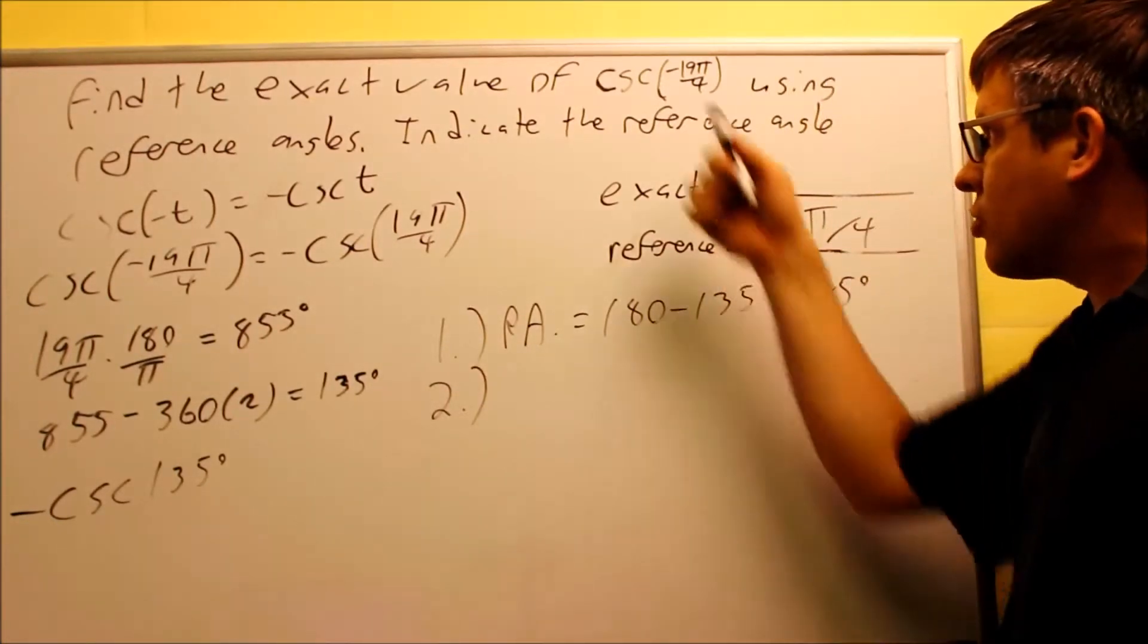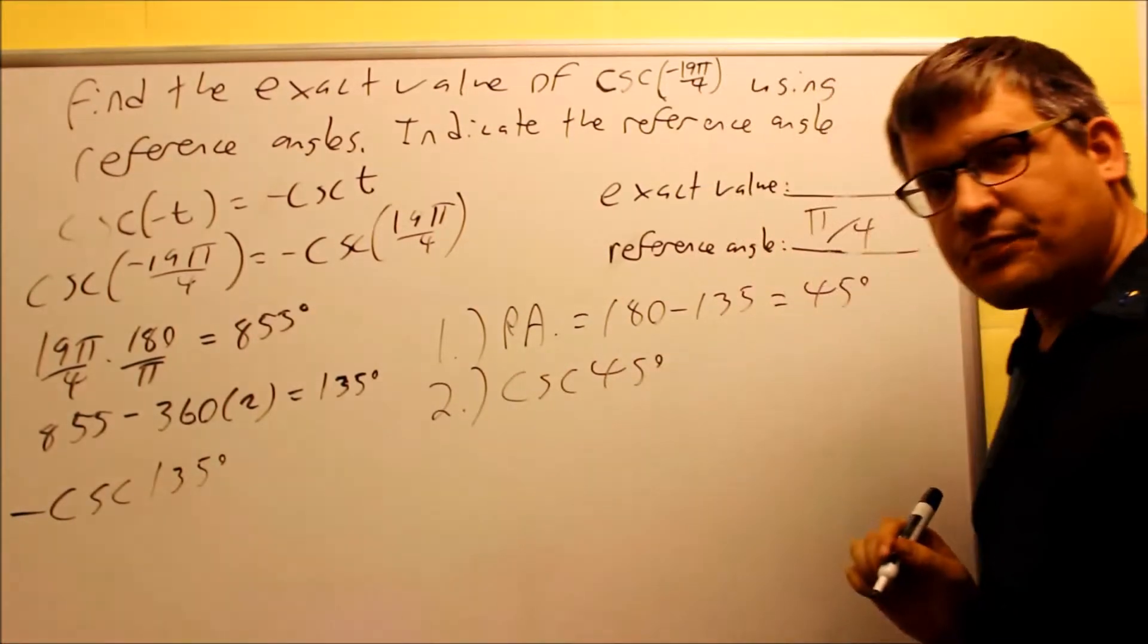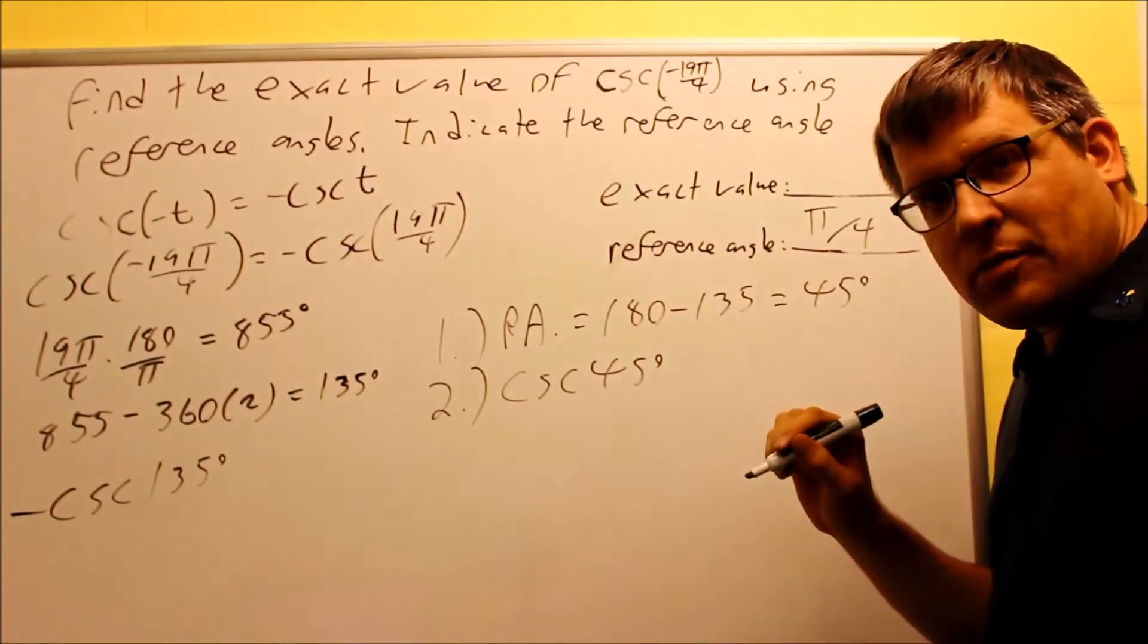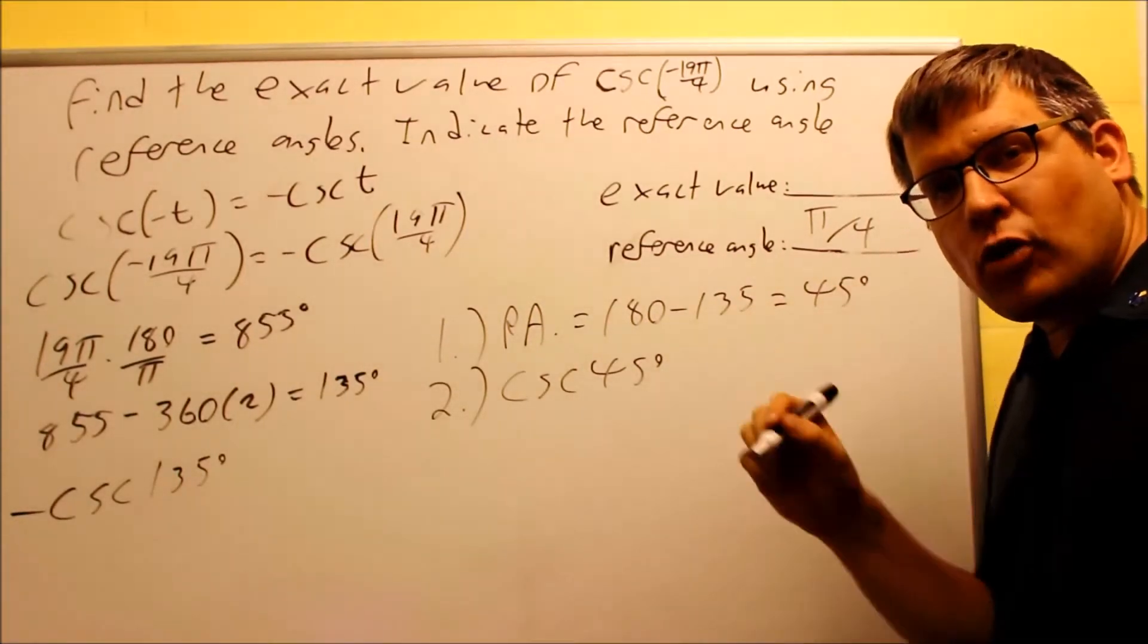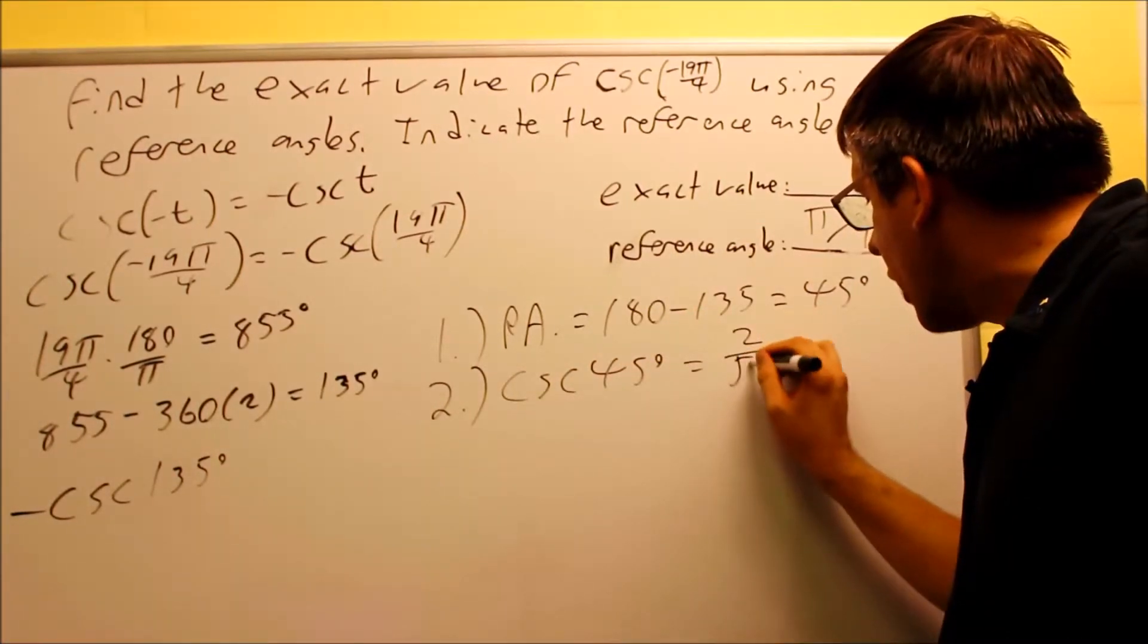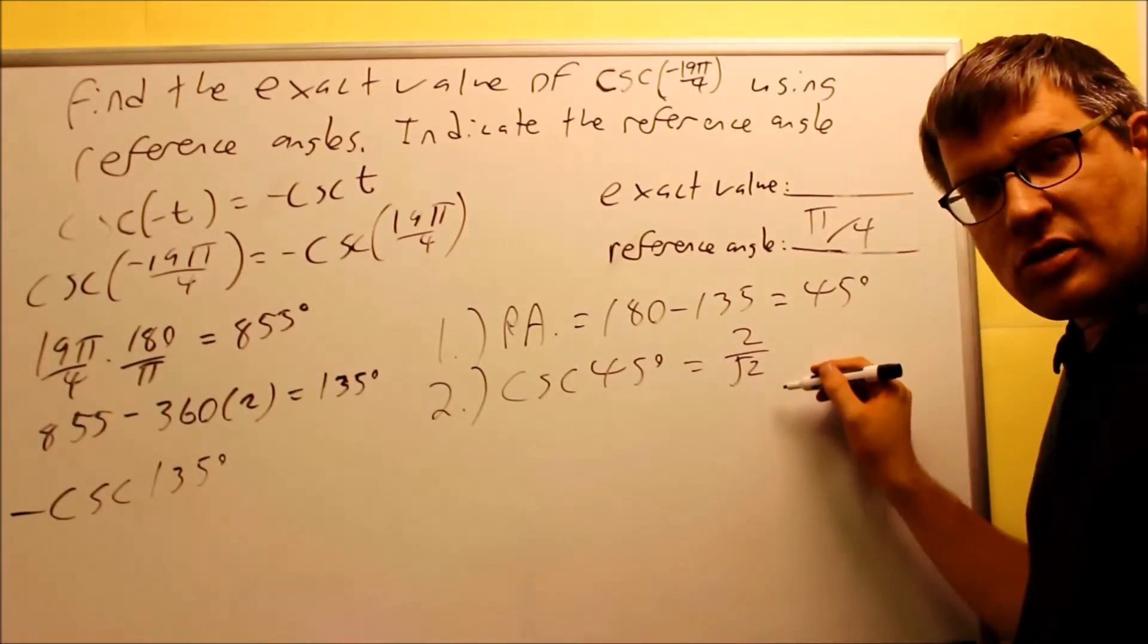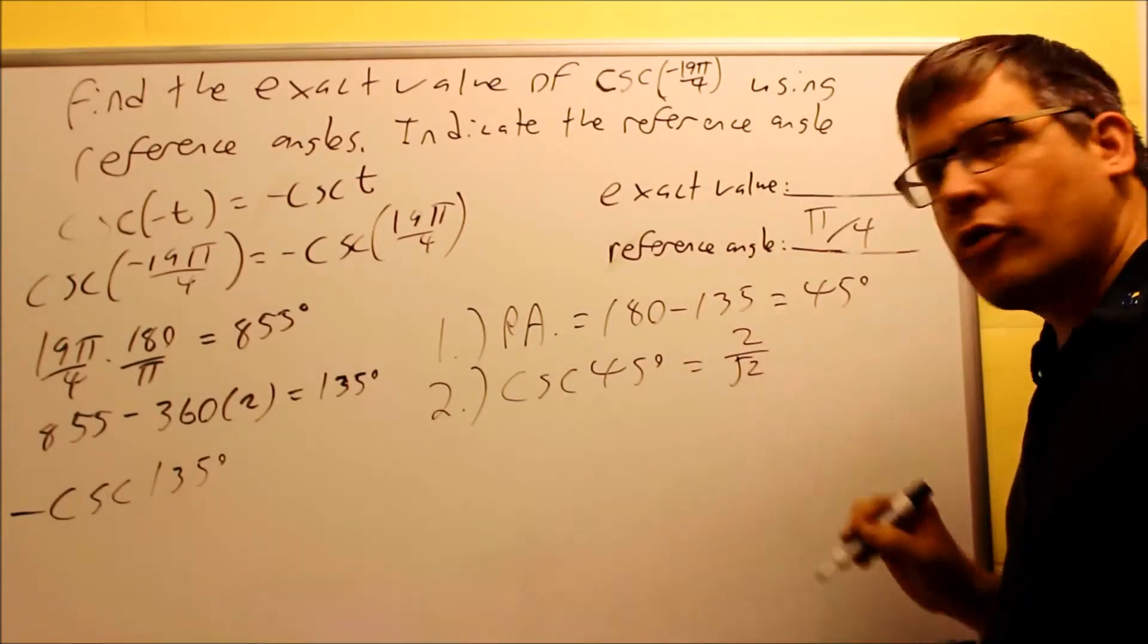Now, I can write that in degrees, but since the original problem was written in radians, I'm going to go ahead and write my reference angle in terms of radians as well. So π over 4. That's my step number 1. Step number 2 would be you're going to apply the trig function to the reference angle. Now that's going to be cosecant 45 degrees. On my table, I don't have cosecant, but I do have a sine. So we know that the sine of 45 is √2 over 2.